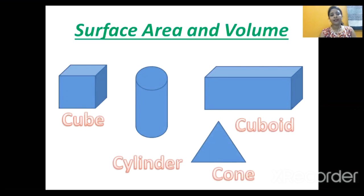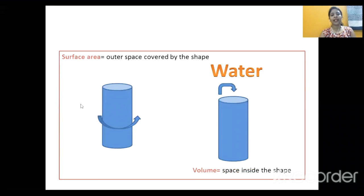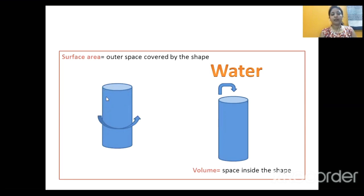Let us understand this topic with an example. Suppose I have this cylindrical shape here — I will assume this as a box. Suppose you have to wrap it with a beautiful paper for a birthday party. You will cover only the outer boundaries, right? That is nothing but surface area. So surface area is equal to the outer boundaries covered by the shape.